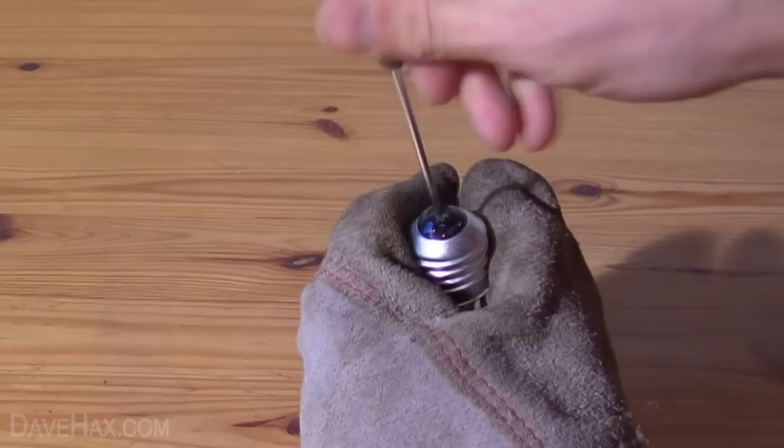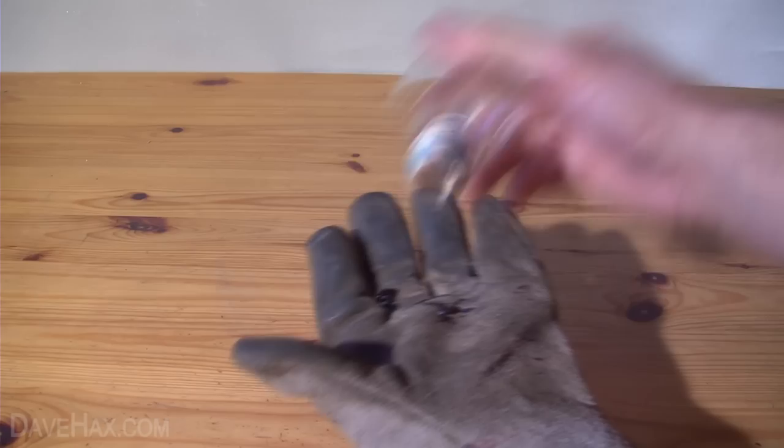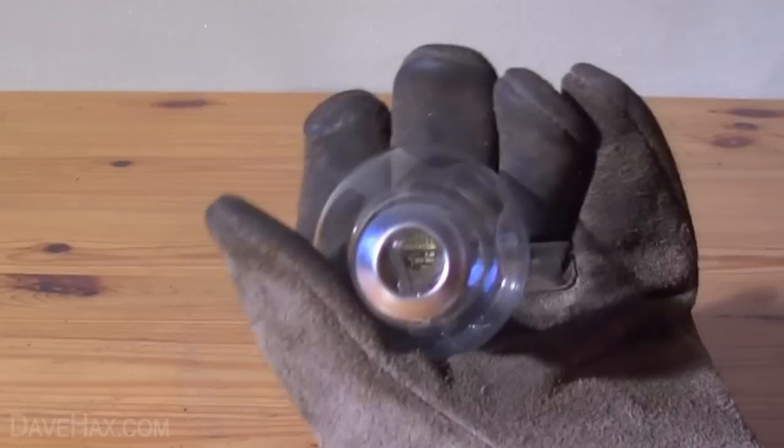Next take a thin screwdriver, hook it through the hole and smash the glass cap off the end. Then using our screwdriver we're going to carefully smash through the glass seal into the bulb.